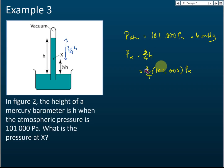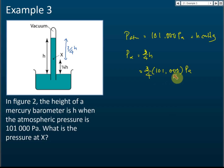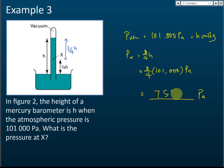So h is equivalent to 101,000 pascal. Three-quarters h is three-quarters times 101,000 pascal. The pressure at x is 75,750 pascal. This point the pressure is h; from this point to x the pressure is three-quarters h.